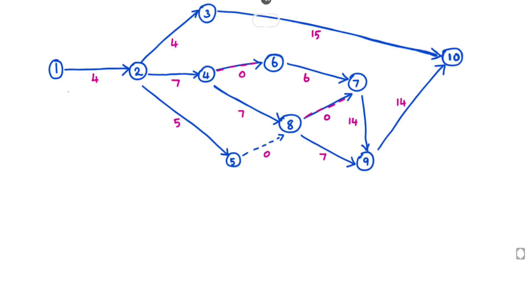Hello friends, welcome to the Solineering exam. Today we are going to see the problem related with construction planning and scheduling. The problem is to find out the critical path and the critical duration for the following network.